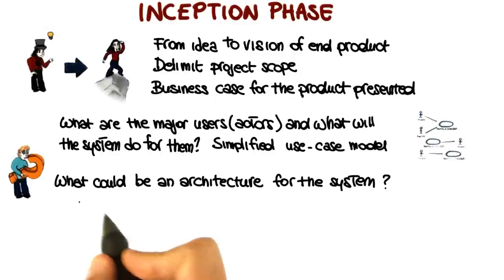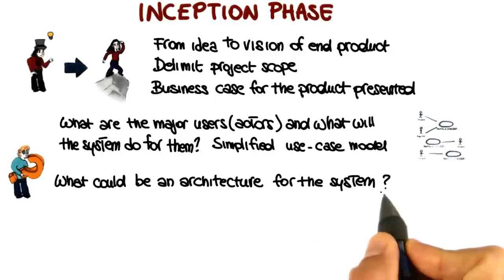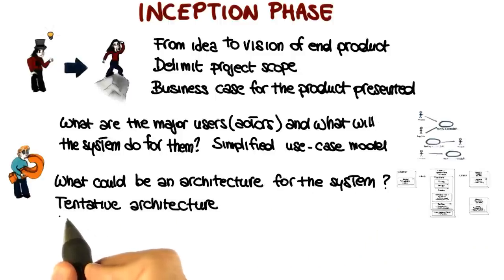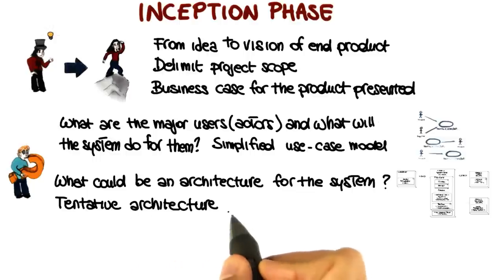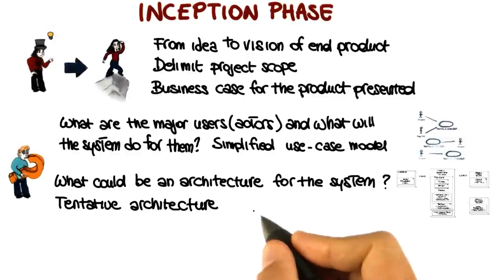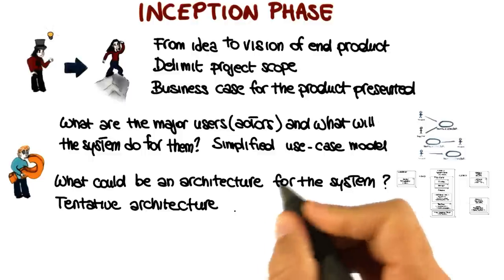The second question is about the architecture. What could be an architecture for the system? So in this phase, we will normally also develop a tentative architecture, an initial architecture that describes the most crucial subsystems.